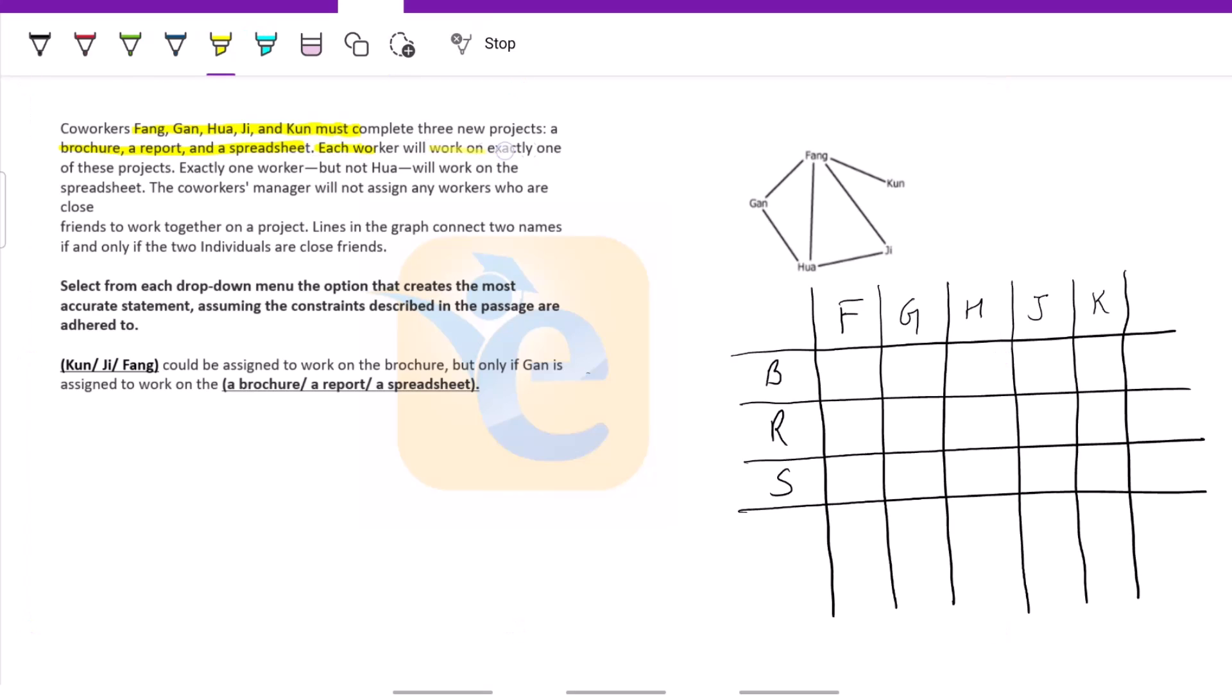Each worker will work on exactly one of these projects. So what does it mean? It basically means that every column can just have one tick. For example, F can only work on spreadsheet and nothing else. So one tick and two crosses. That's what we understood from the statement. Just one tick per column.